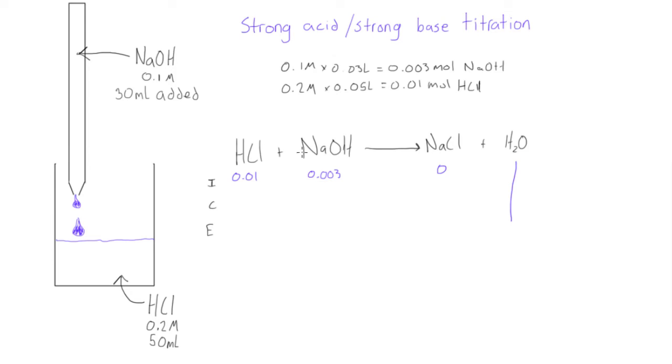So what's happening here is these are reacting in a 1 to 1 ratio. So one of these is going to be the limiting reactant. And that's going to be the NaOH because we have less of it. So basically we're going to be able to react 0.003 moles.